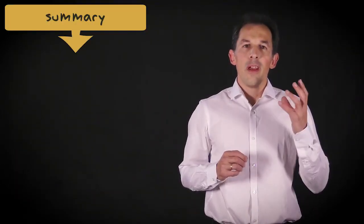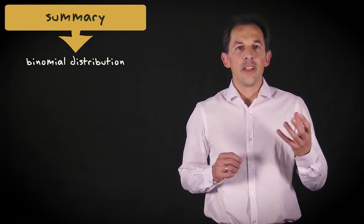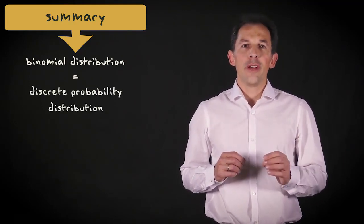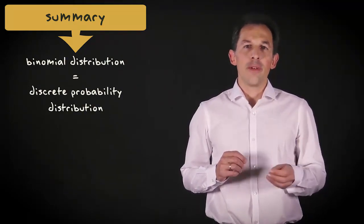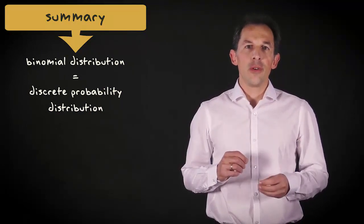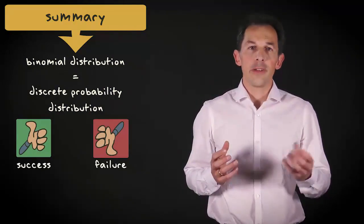Let me summarize what I have explained in this video. The binomial distribution is a discrete probability distribution that is used when a random variable can have two mutually exclusive outcomes, success and failure.